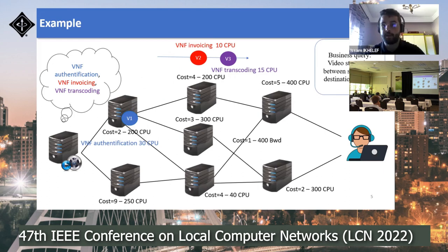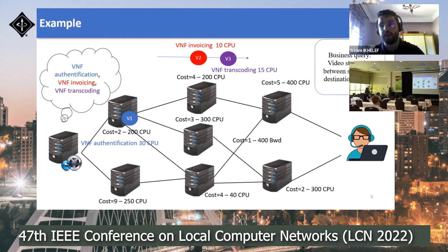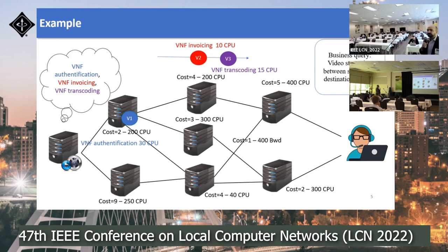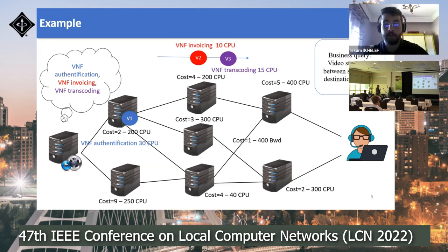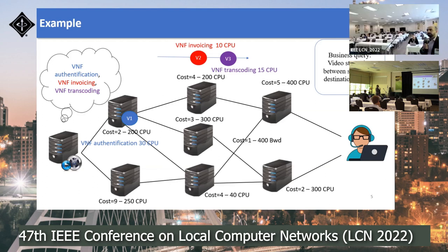In the ILP we took all constraints into consideration: links capacity and nodes capacity. For the nodes we have many types of capacity — storage, calculation, and many types of resources. They do have different weights, and these are managed by the network operator, who decides which of these considerations are most important.